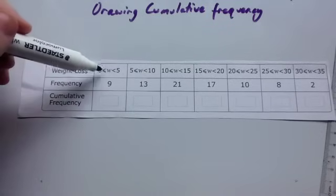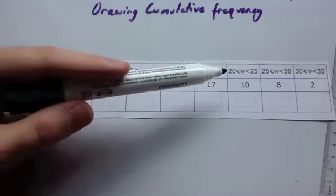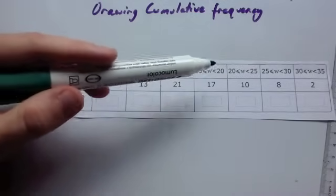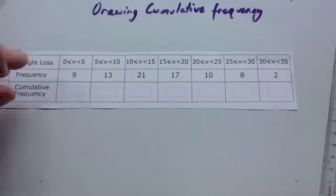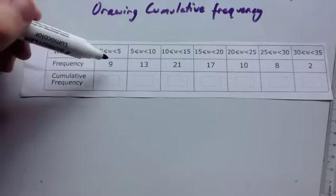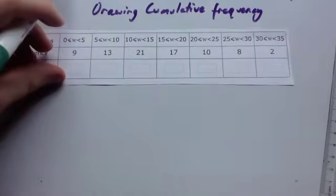It's for weight loss, and it goes 0 to 5, 5 to 10, 10 to 15, 15 to 20, 20 to 25, 25 to 30, and 30 to 35. And it's giving you the frequency, as it should in the exam: 9, 13, 21, 17, 10, 8, and 2.